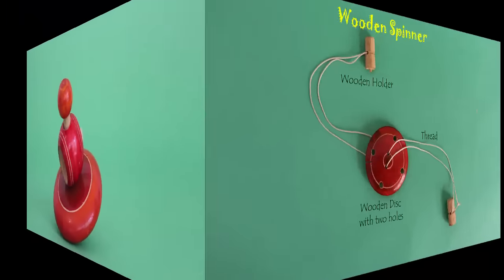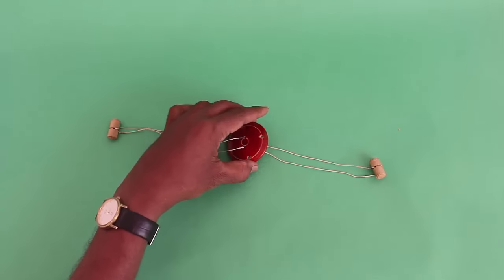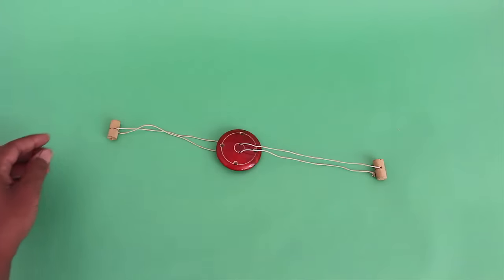Now, the other wooden spinner is almost universally available in all cultures. A loop of thread is woven through the two holes of a wooden disc.